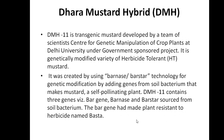Next, Dhara Mustard Hybrid (DMH): mustard is a kind of herbicide-tolerant hybrid variety initiated by Delhi University — it is a government-sponsored project. It is created using barnase and barstar technology. The soil bacterium makes the mustard self-pollinating. DMH-11 contains three genes: bar gene, barnase, and barstar, which are taken from the soil bacterium. The bar gene makes it resistant to the herbicide Basta.